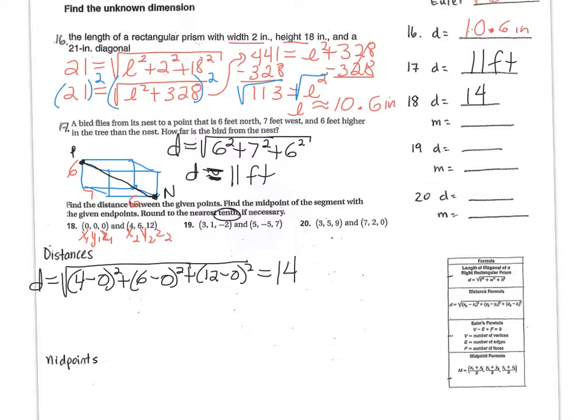Now for the midpoint, it would be midpoint. You add the x's, so 0 plus 4 divided by 2, add the y's, 0 plus 6 divided by 2, and then add the z's, so it's 0 plus 12 divided by 2. So half of 4 is 2, of 6 is 3, and of 12 is 6. Those are the midpoints. Any questions on that?